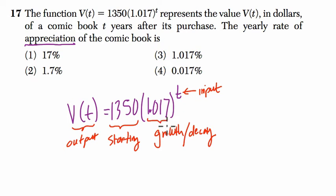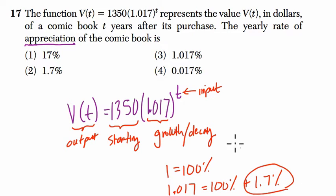So how do you read the growth and decay? Well, this is always built around 1 because 1 equals 100%. So essentially, if I see 1.017, I know that's 100% plus 1.7% because 1.7% is 0.017. So this is a growth rate of 1.7%, which is choice two.